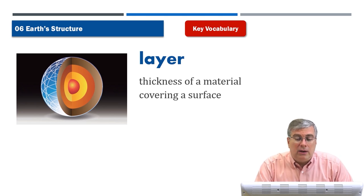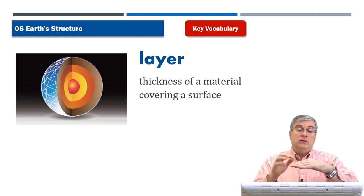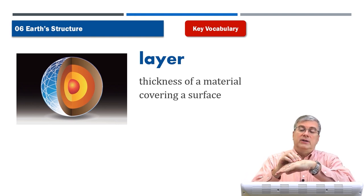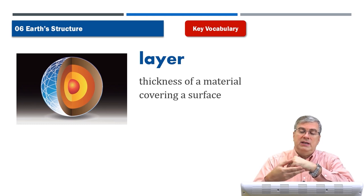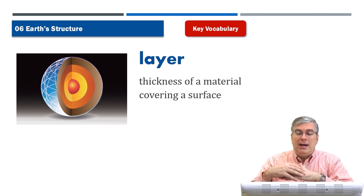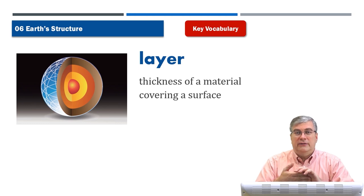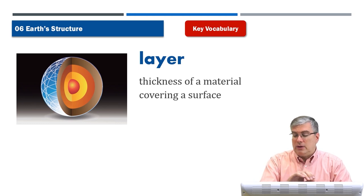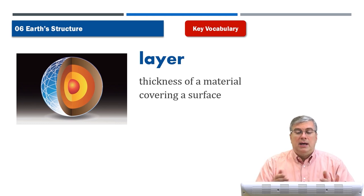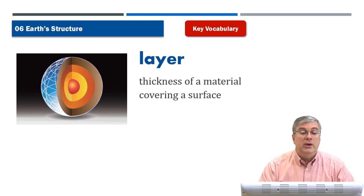'Layer' is a thickness of a material covering a surface. Think about your hand — there is a layer of skin on your hand. The skin covers the entire surface of your hand with a certain thickness. Whatever it is, a layer is a thickness of something that covers the surface of another thing.